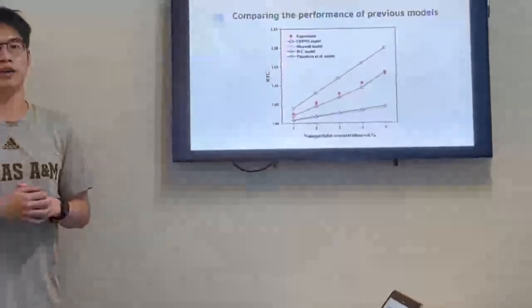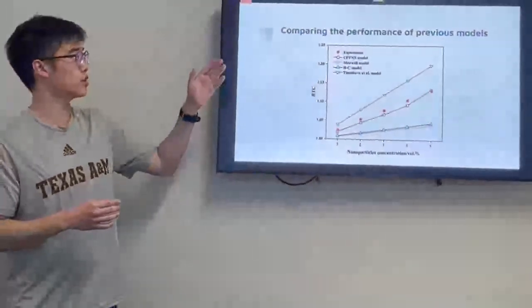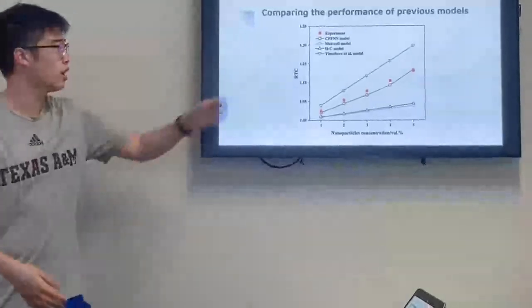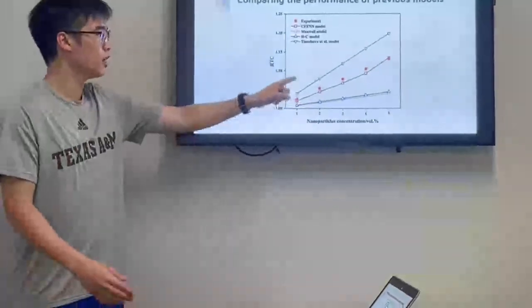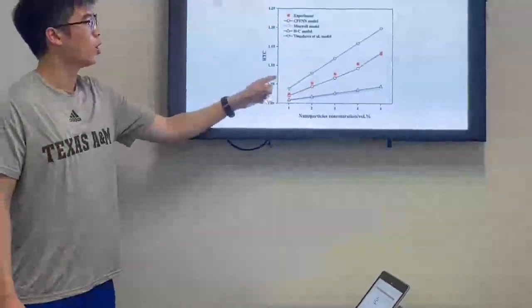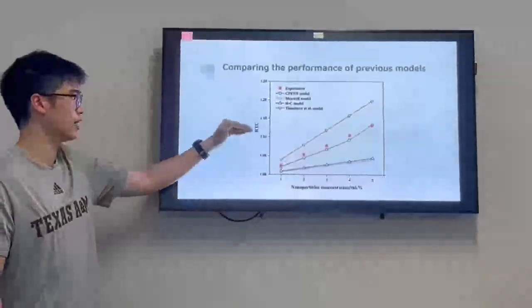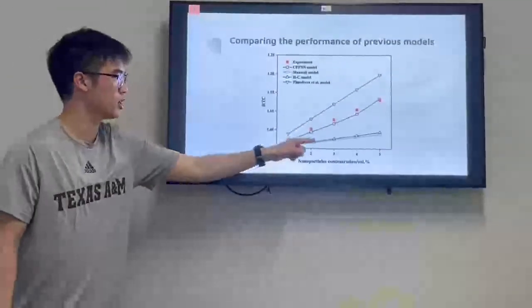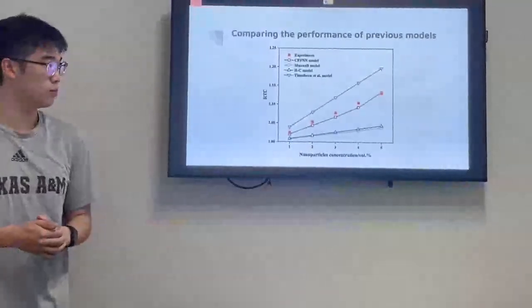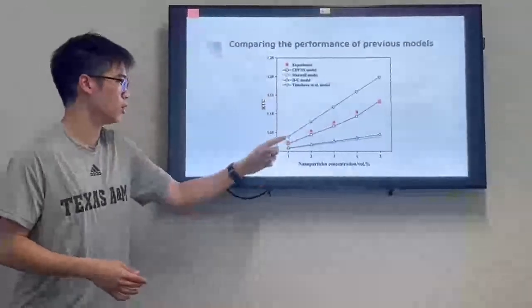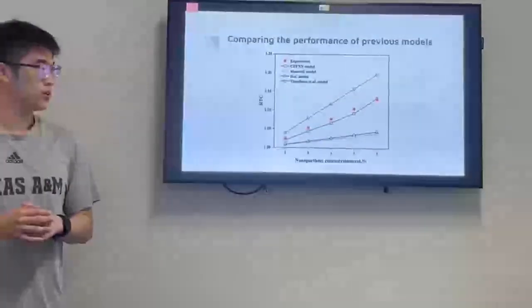I took this diagram from the text. It's the diagram of comparing the performance of previous models. As you can see in the figure right here, the green triangle is always the leader. It always has the highest RTC in each nanoparticle concentration volume percentage. And the experiment is always in the middle. Thank you.